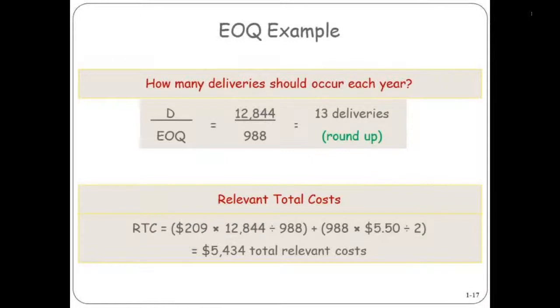Your total costs would be your total ordering costs for all of those deliveries plus your total carrying costs, which comes out to $5,434 at that level.